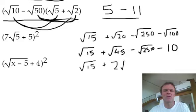So, root 4 times 5, that's 2 root 5. Square root of 25 is 5, with a root 10. And take away 10. This is horrible. Is that it?